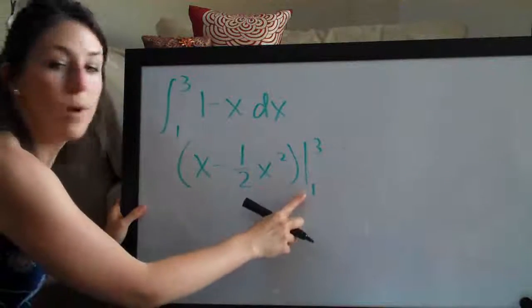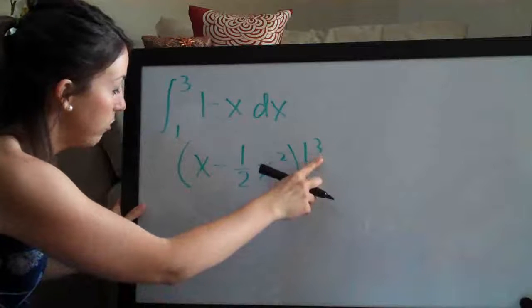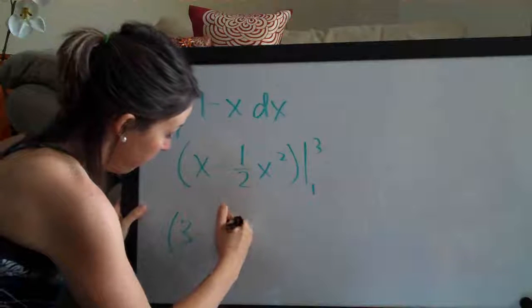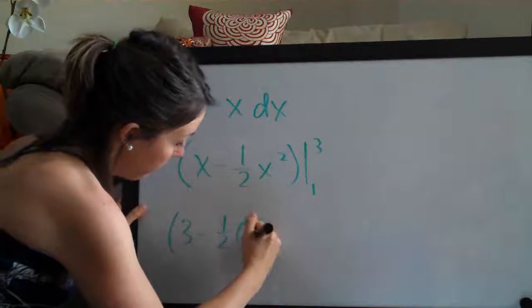And when we evaluate from 1 to 3, we first plug in 3 to this whole function here. So that looks like 3 minus 1 half times 3 squared.